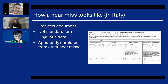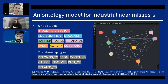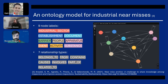Near misses are made up of linguistic data — it's a narrative — and apparently all these documents are unrelated to one another. There is no clear connection between all these documents. So here we started thinking about using a knowledge graph to try to find correlations and exploit some knowledge from these text documents. To do so, our first step was about defining an ontology for industrial near misses. In collaboration with INAIL, we developed this ontology model that is made up of nine node labels, so we can define nine types of entities, namely: industrial sector and industrial establishment.